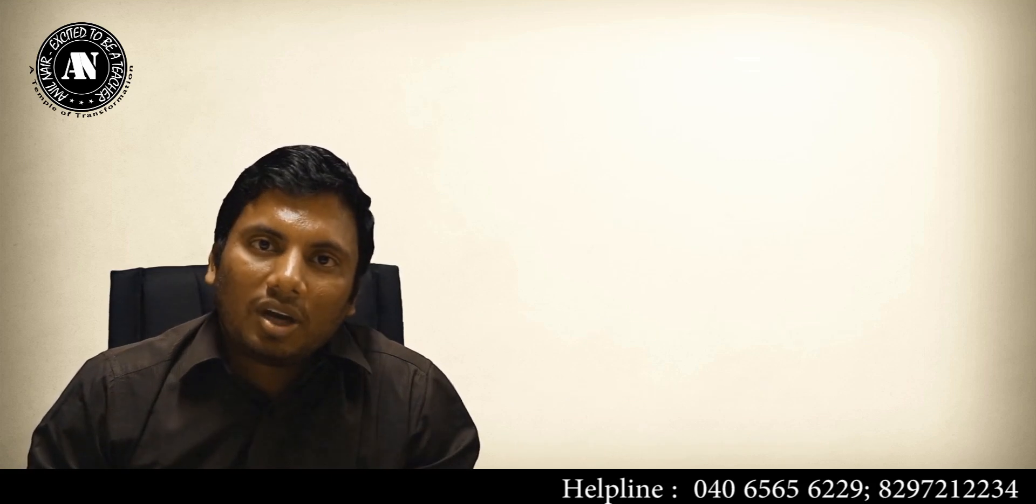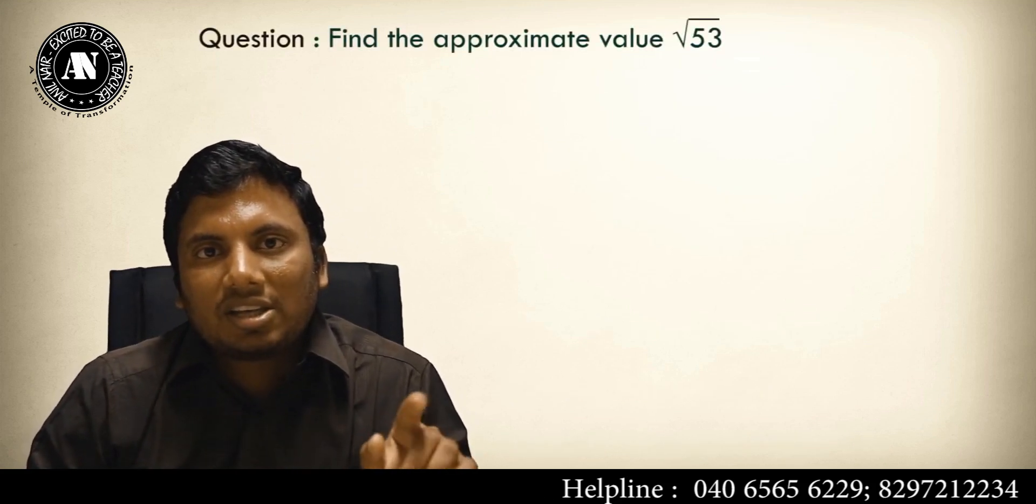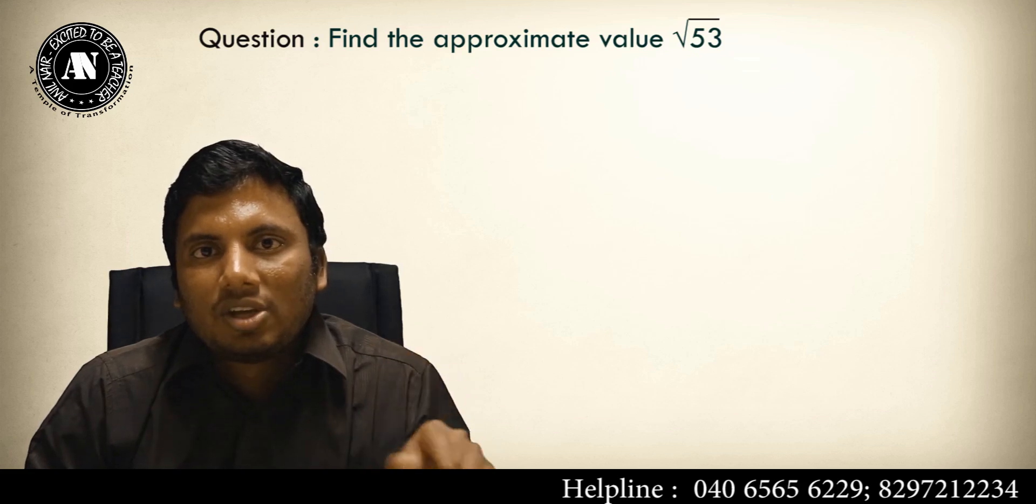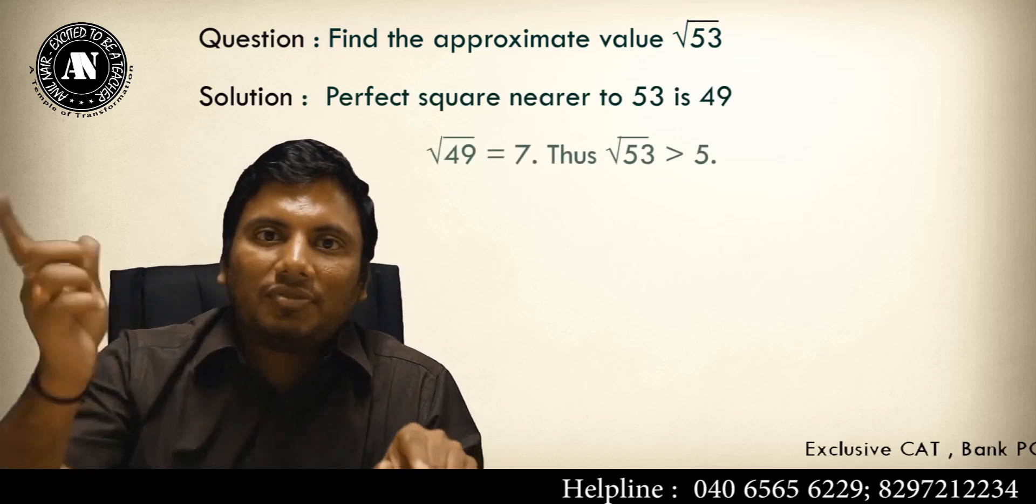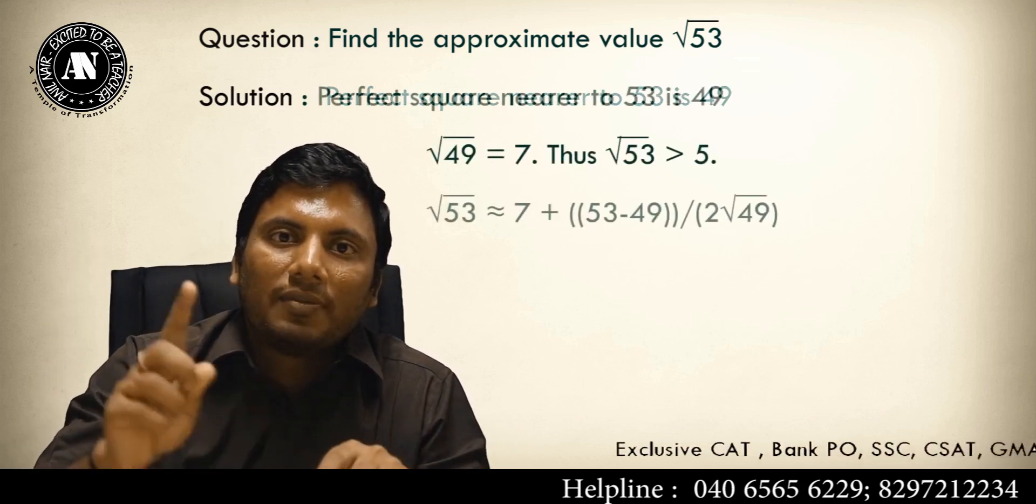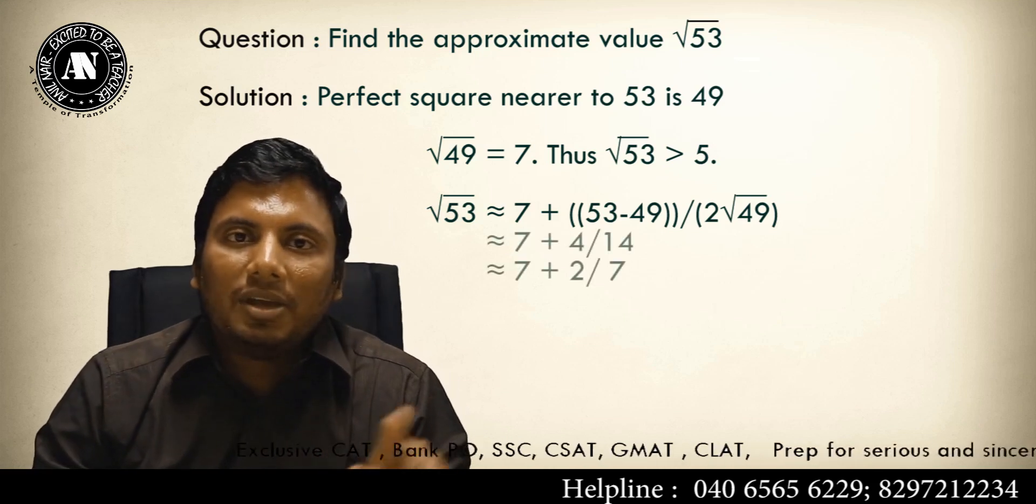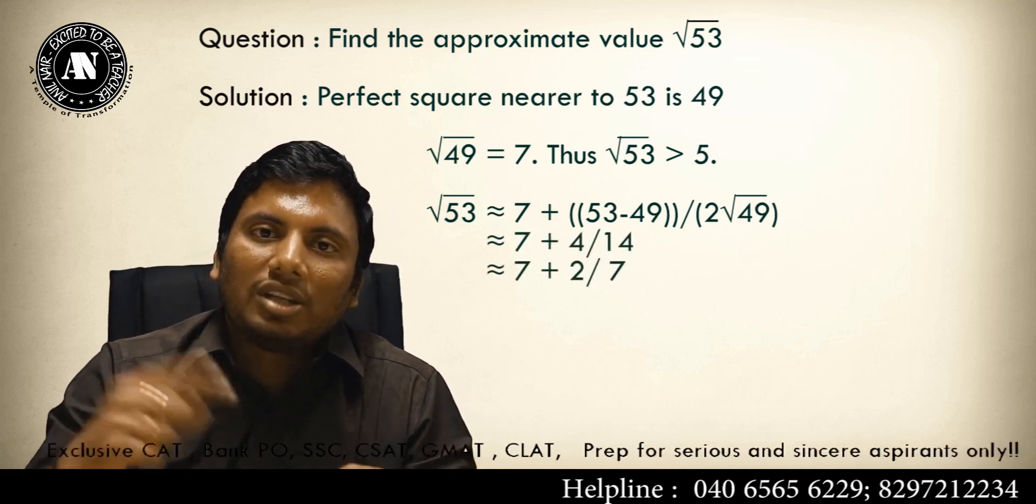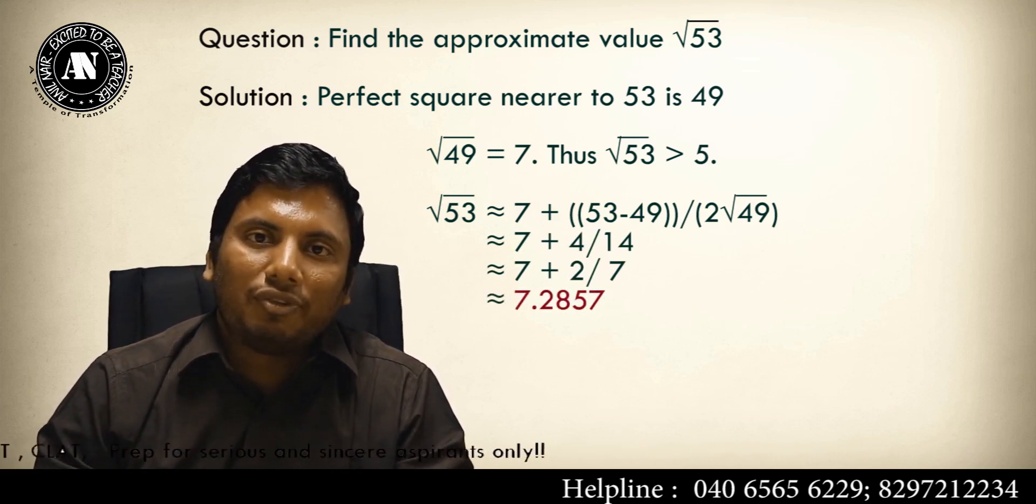Last one, try to solve this question orally. Square root of 53. What is the nearest perfect square nearer to 53? Square root of 49. Square root of 49 is 7. 7 plus 53 minus 49, what is the difference? 4. Double 7, what is the double of 7? 14. So answer will be 7 plus 4 by 14. What is 4 by 14? 2 by 7. So answer will be 7.285714.